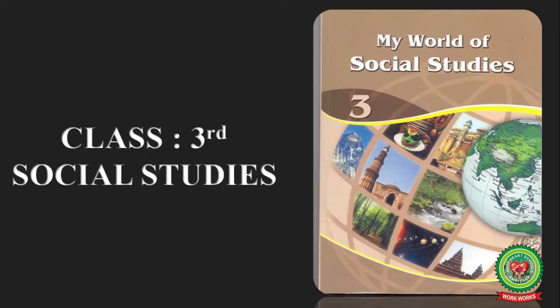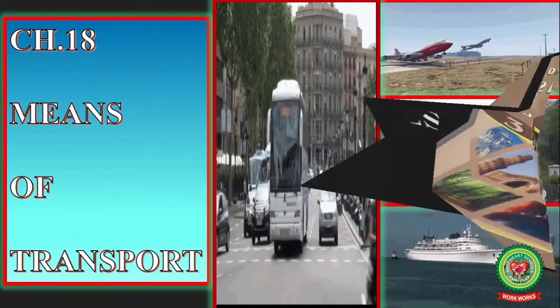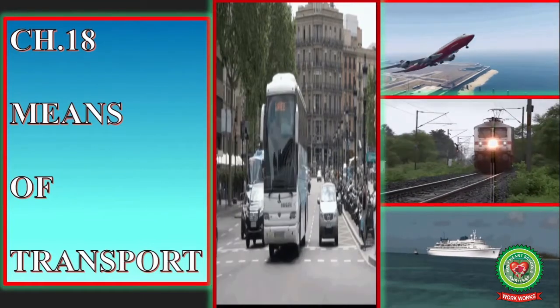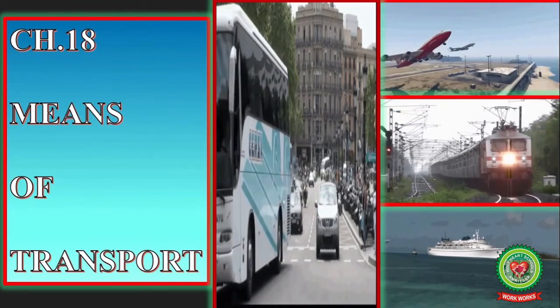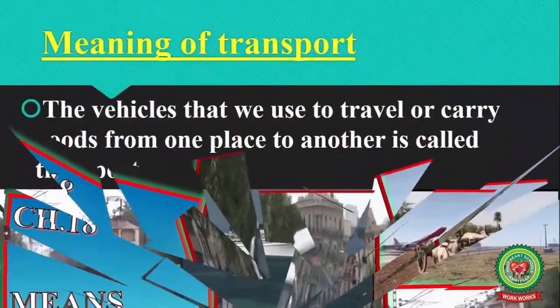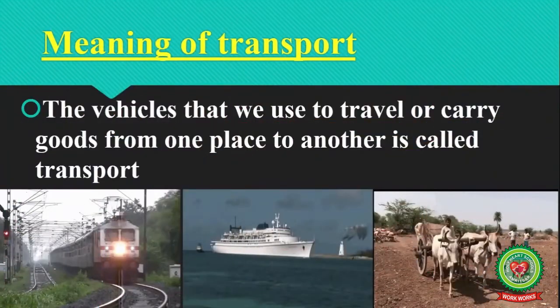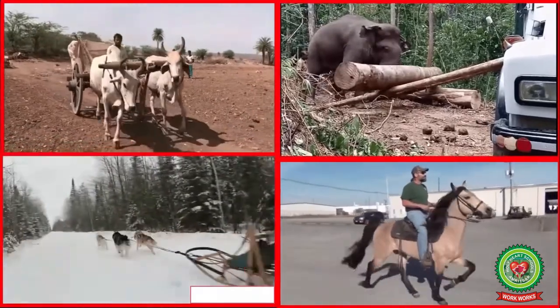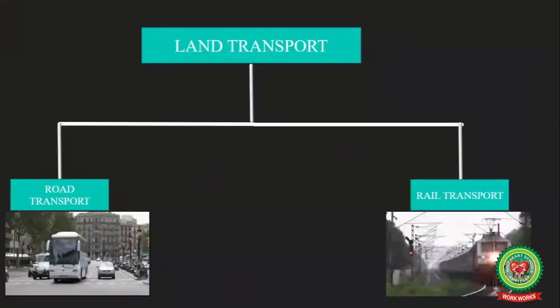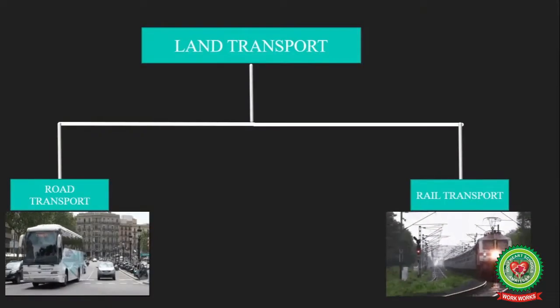Hello students, welcome to the SST class. Today is the third day of chapter 18, means of transport. In this chapter we have already discussed the meaning of transport, different animals used for transportation, and the two main forms of land transport.